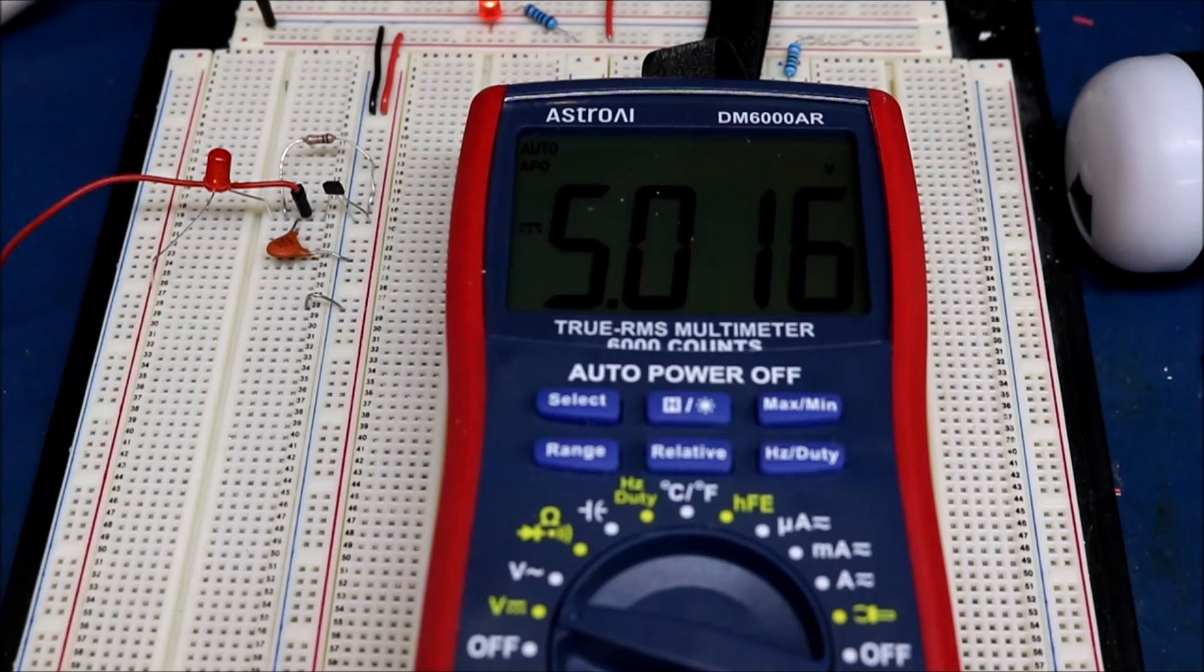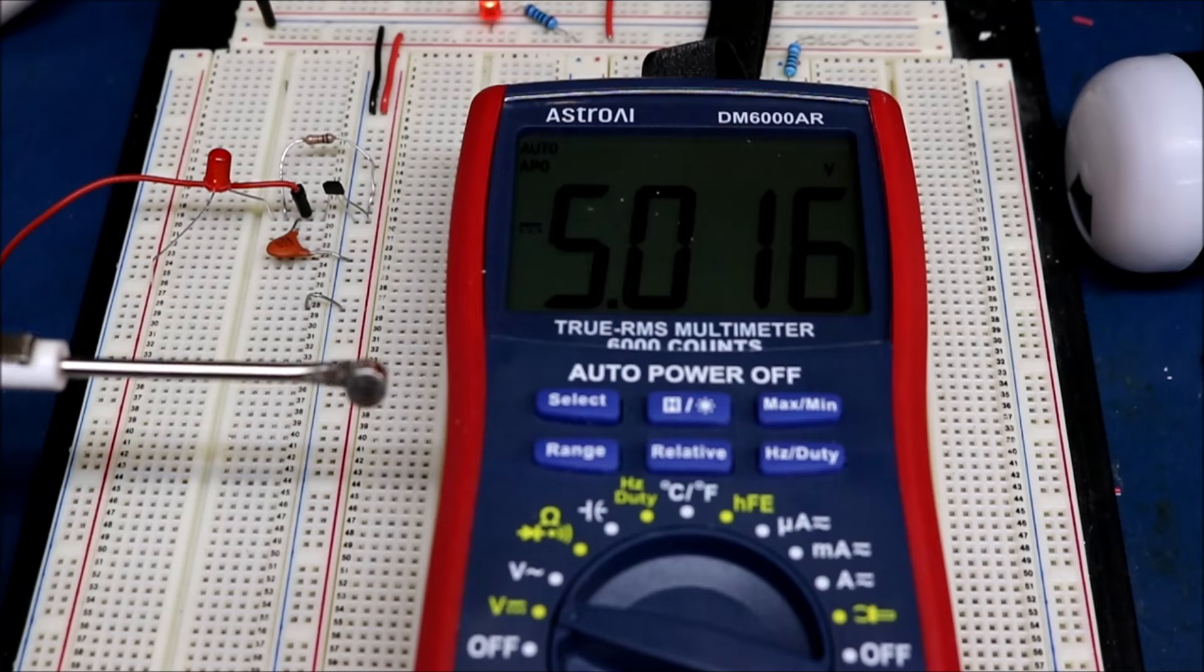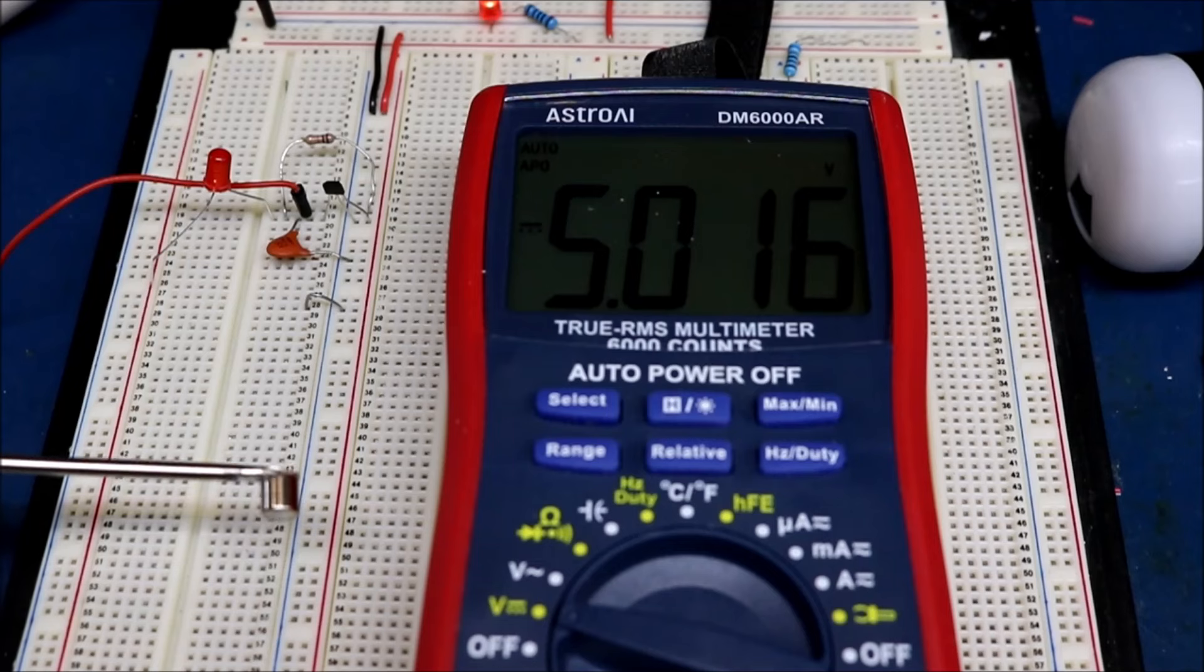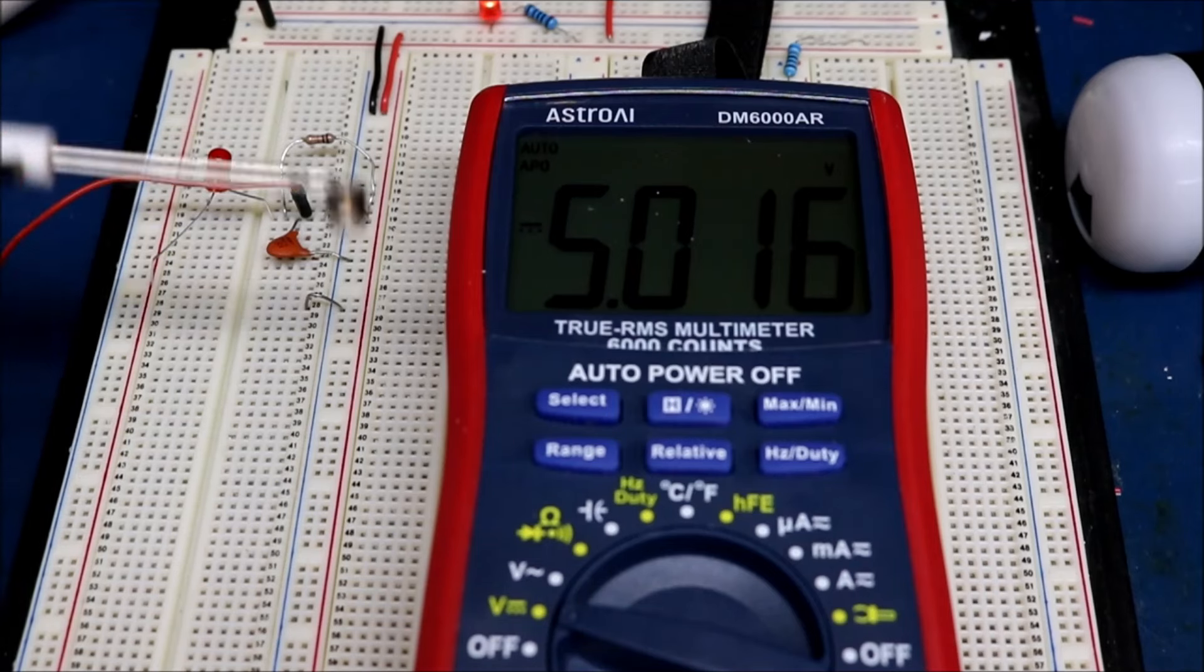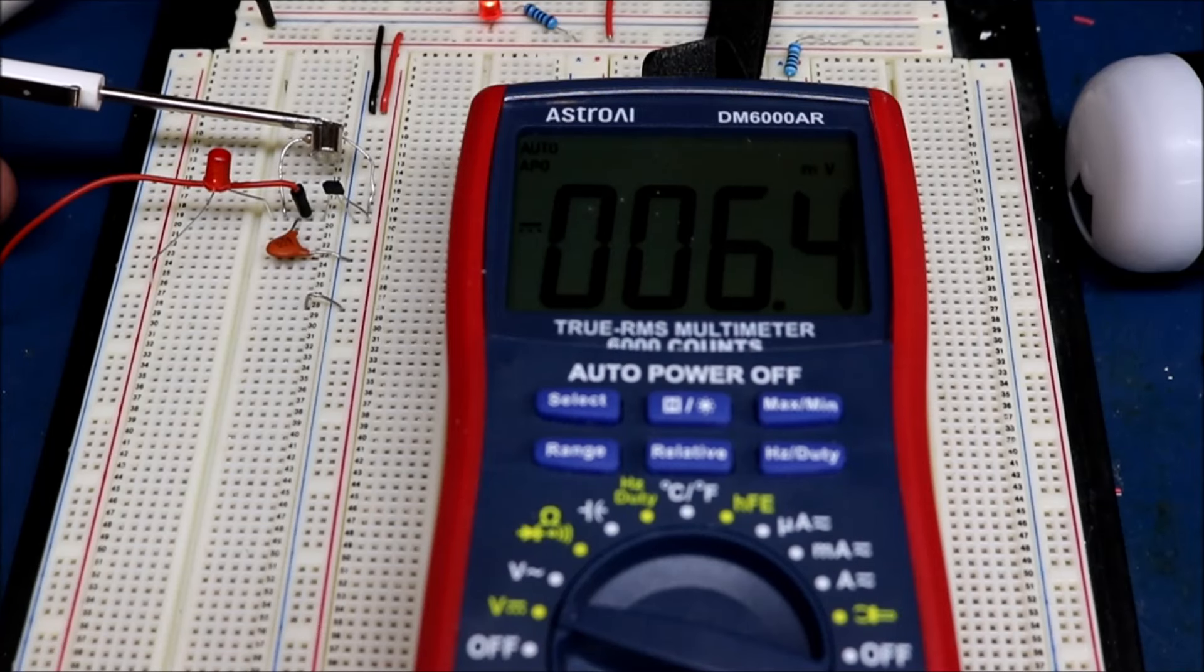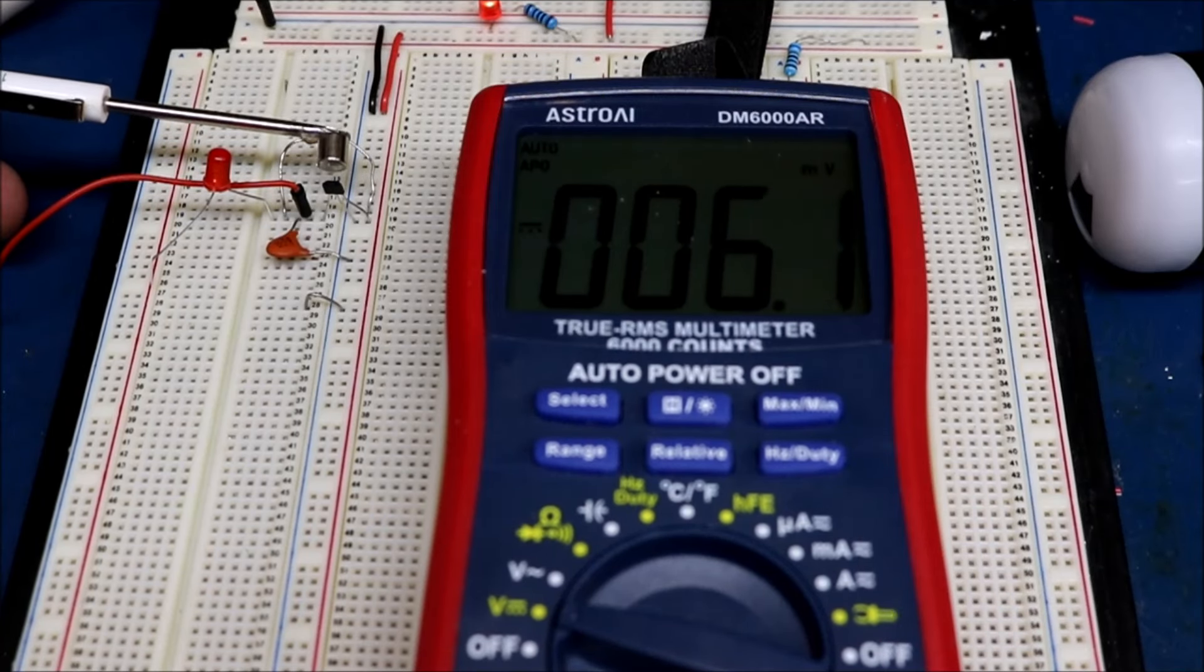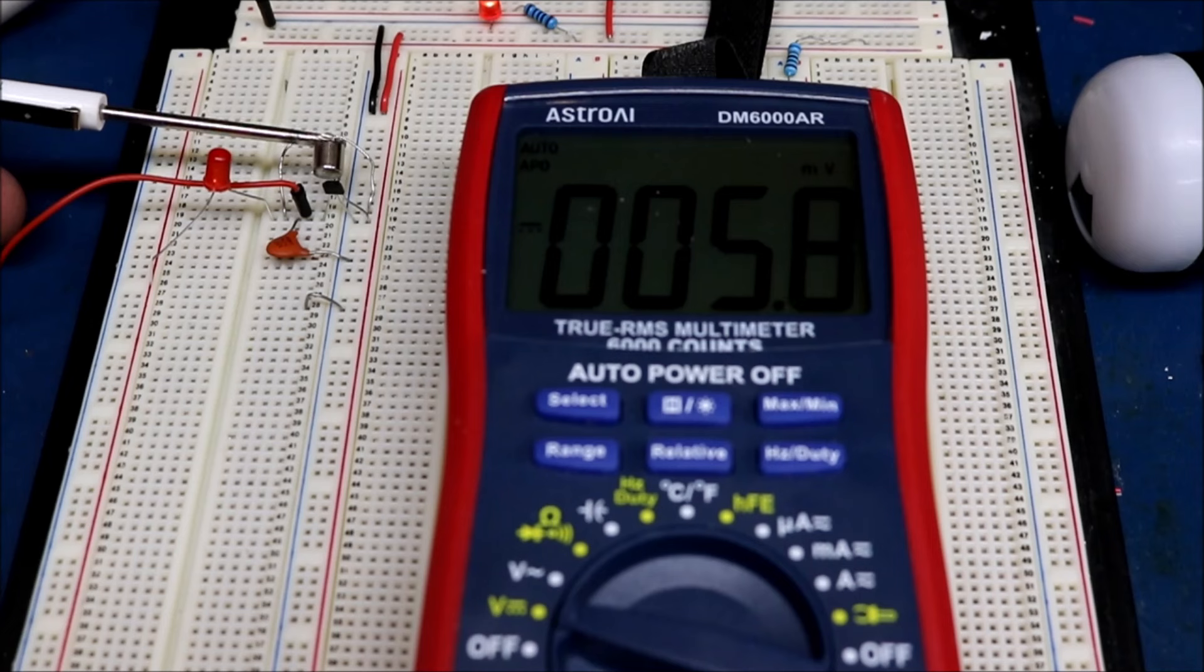I have a neodymium magnet right here on a screwdriver that's magnetized to a screwdriver, just for me to be able to handle it easier, and you notice the voltage is 5 volts. When I put the magnet near the sensor, it drops to 59 millivolts, essentially zero.